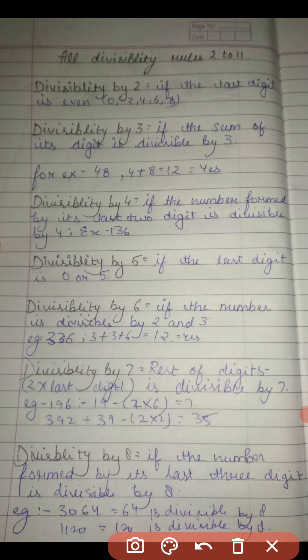First is divisibility by 2. If the last digit is even, 0, 2, 4, 6, 8, then it will be divisible. For an example, there is 0, 2, 4, 6, 8.